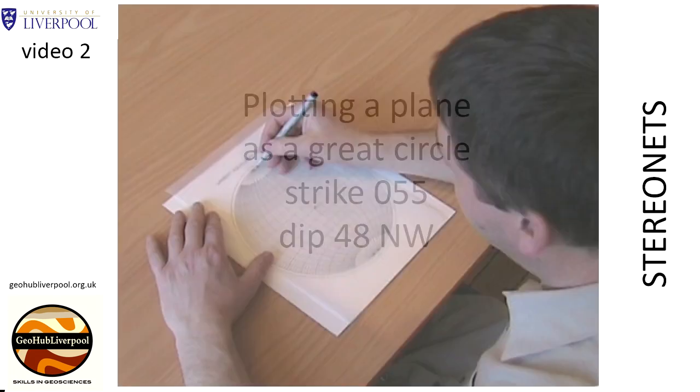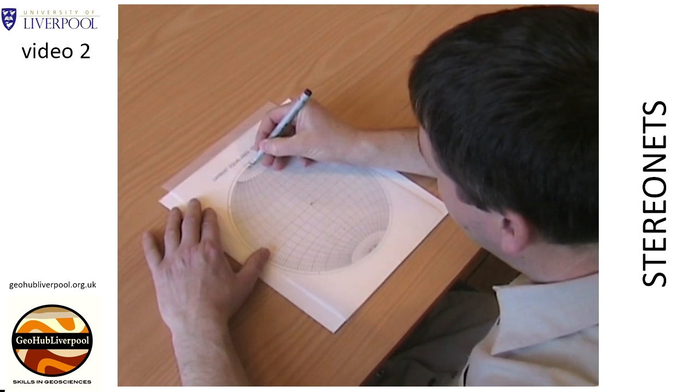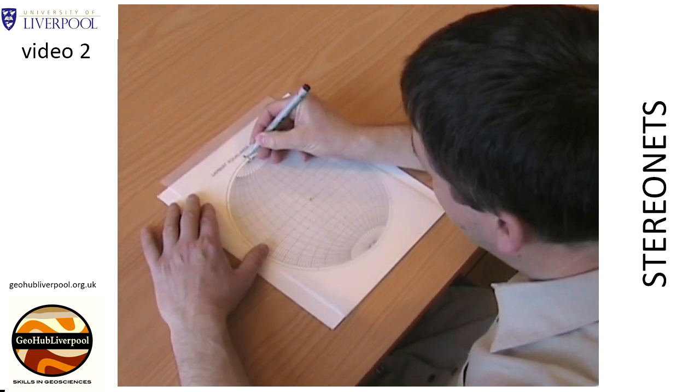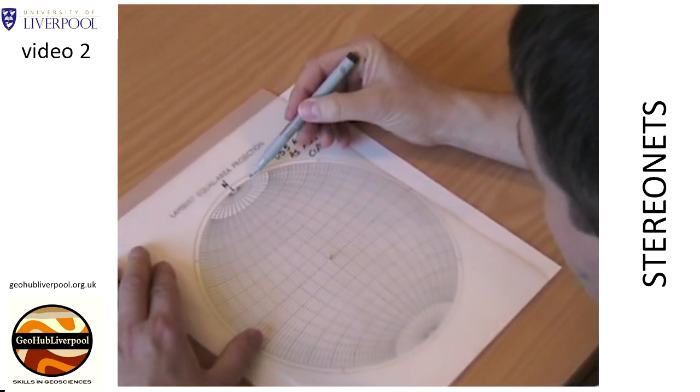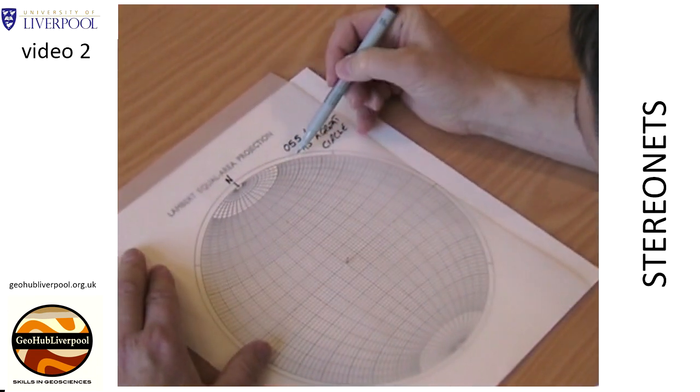Mark the north pole on the tracing paper. Count 55 degrees around the primitive circle. Remember that heavy lines are at 10 degrees and the subdivisions are at 2 degrees.